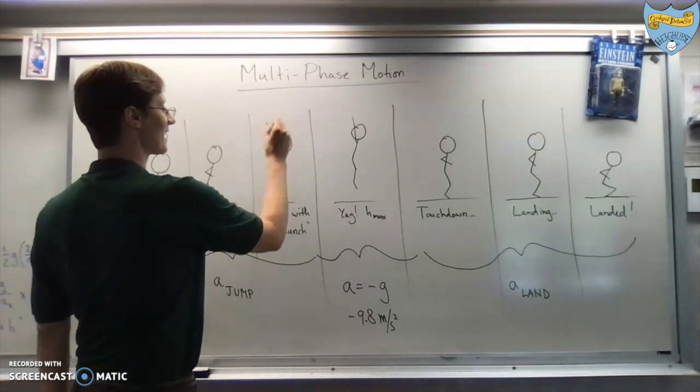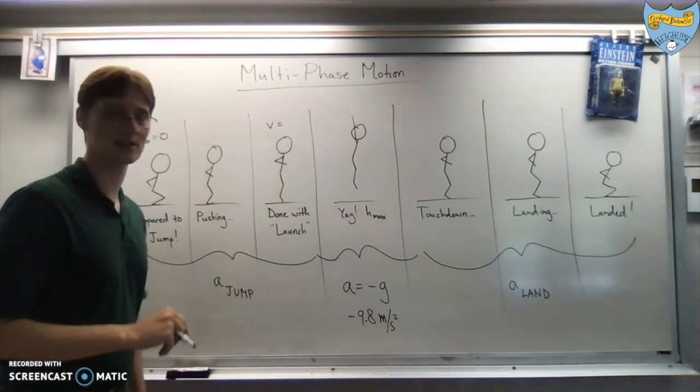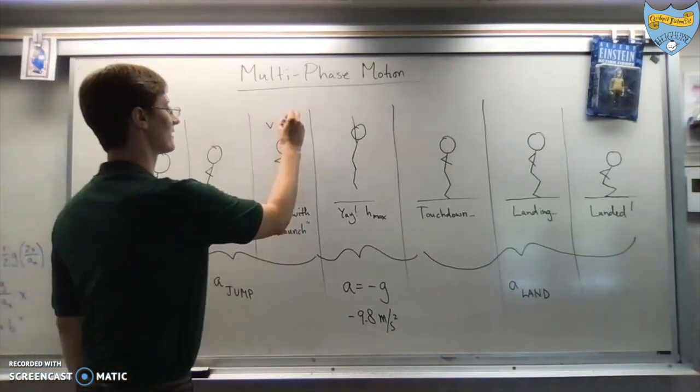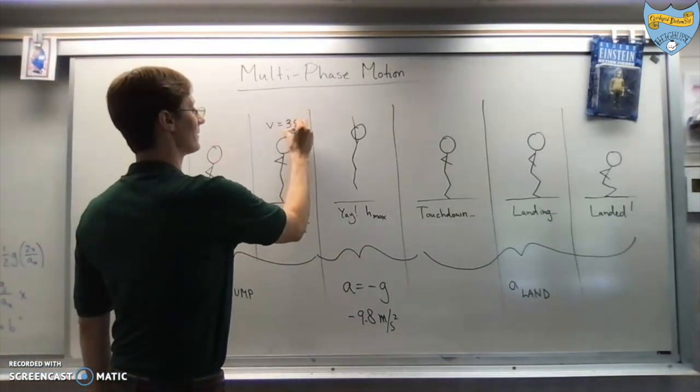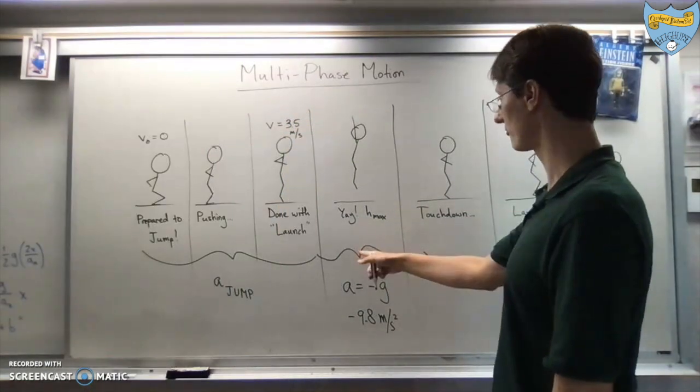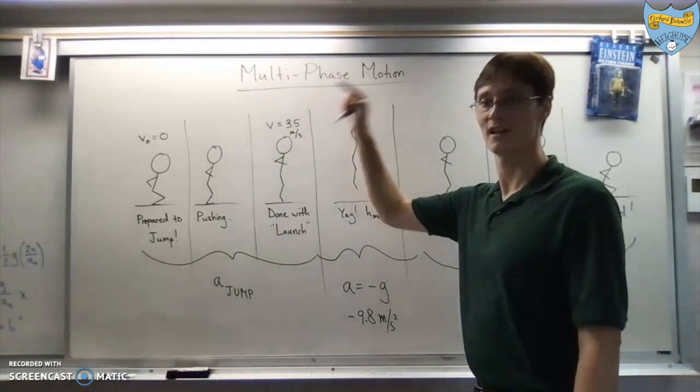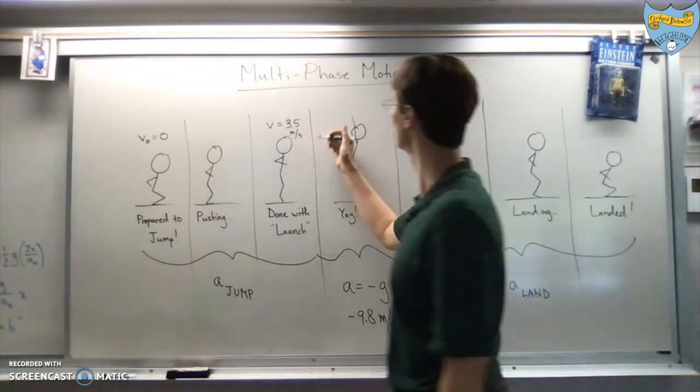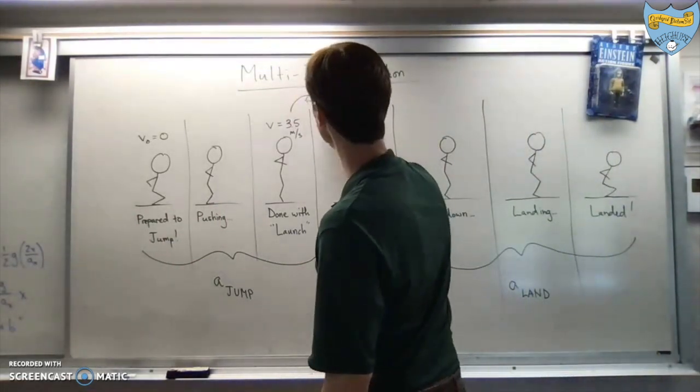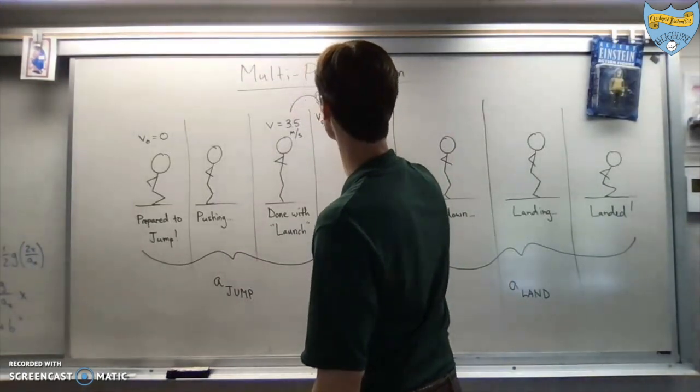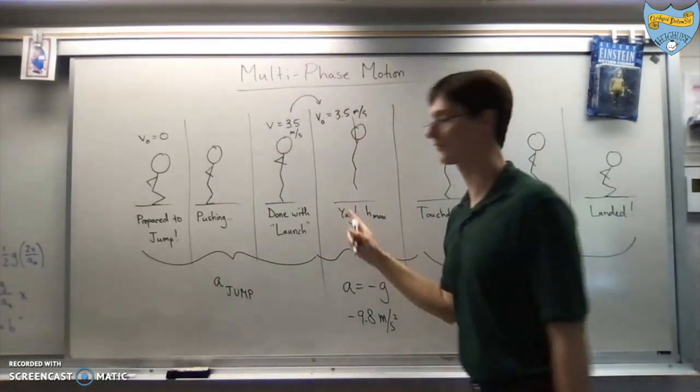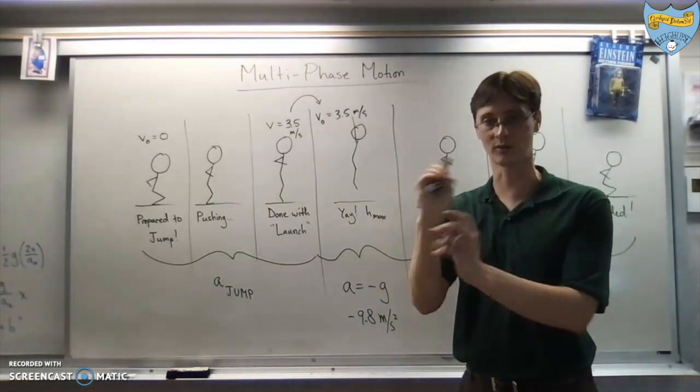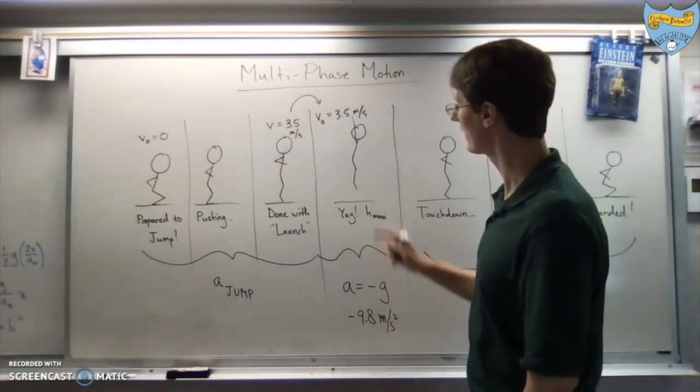Let me make up a number here. Let's say that your final velocity at the moment that your feet leave the ground is about 3.5 meters per second. And then for this part, this final velocity at the end of the jump becomes the initial velocity for the part of your motion, which we would consider the flying through the air part where gravity is in charge.